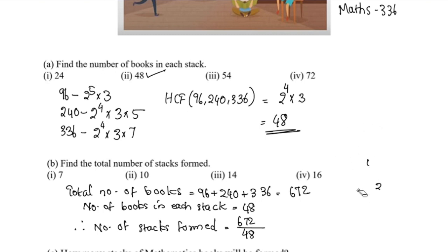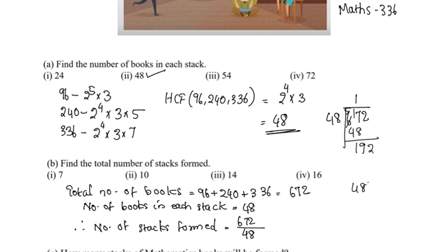Calculating 672 ÷ 48: 48 into 14 gives 672. So the number of stacks formed is 14. Option 3 is the correct answer.